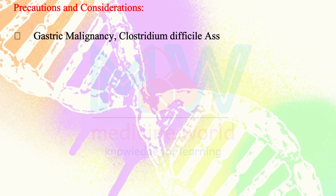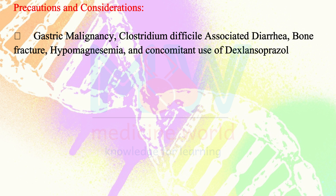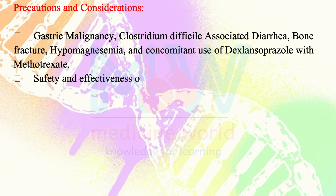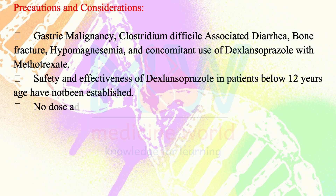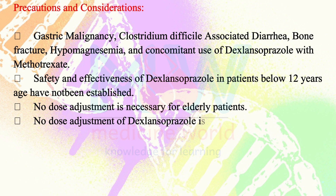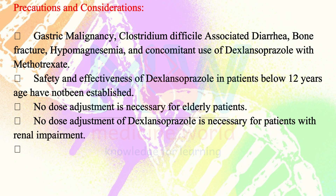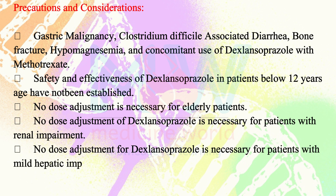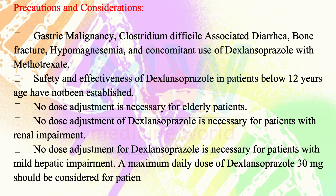Precautions and considerations of dexlansoprazole include gastric malignancy, Clostridium difficile-associated diarrhea, bone fracture, hypomagnesemia, and concomitant use with methotrexate. Safety and effectiveness in patients below 12 years of age have not been established. No dose adjustment is necessary for elderly patients or for patients with renal impairment. No dose adjustment is necessary for patients with mild hepatic impairment; however, a maximum daily dose of 30 mg should be considered for patients with moderate hepatic impairment.